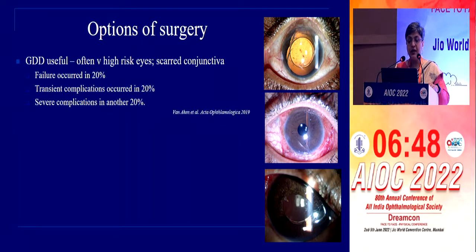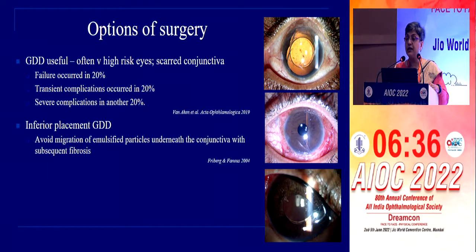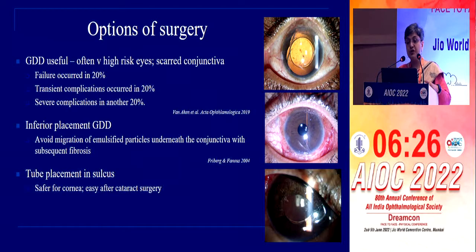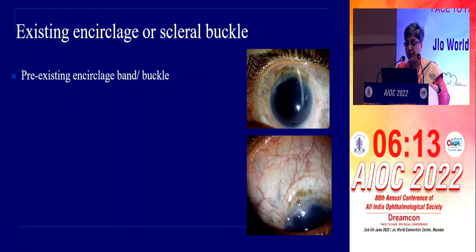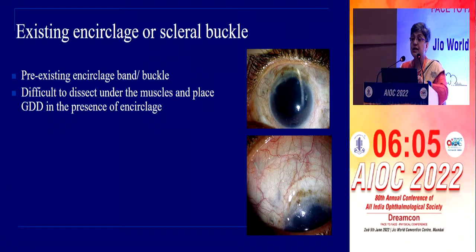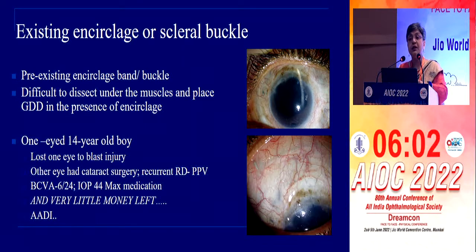Options for surgery: a GDD is useful because these are often very high-risk eyes with scarred conjunctiva. One study reported failure in 20%, transient complications in 20%, and severe complications in another 20%. Inferior placement of the glaucoma device is important to avoid migration of emulsified particles beneath the conjunctiva causing fibrosis. Tube placement in the sulcus is safer for the cornea. If there is pre-existing glaucoma, a combined PPV and tube procedure may be needed.